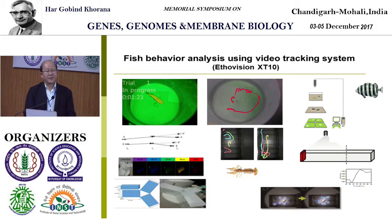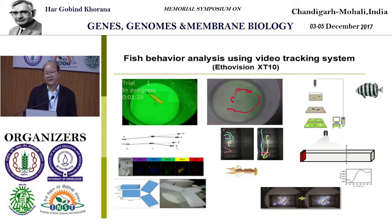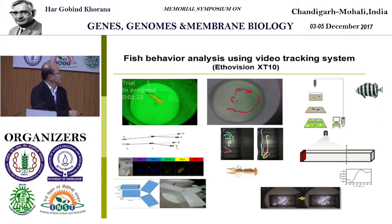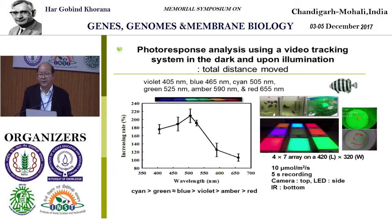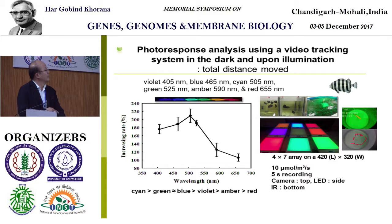In the video tracking system, we placed fish in the tank and tracked their movement upon light activation. For some fish we also used a Y-shaped experimental system, placing the animals at the center and illuminating from one side to determine whether the fish move toward the light source or avoid it. Results from the video tracking system were similar to the previous results — cyan is more effective in inducing photoresponse in fish.